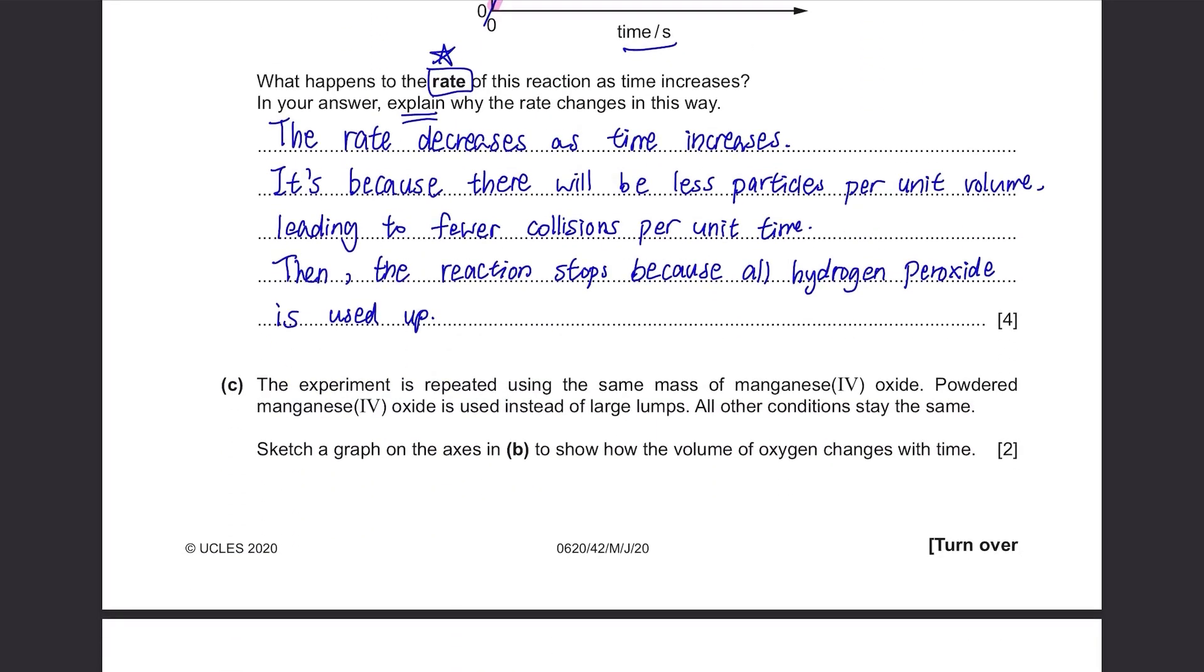Part C: The experiment is repeated using the same mass of manganese 4 oxide. Powdered manganese 4 oxide is used instead of large lumps. All other conditions stay the same. Sketch a graph on the axis to show how the volume of oxygen changes with time. What difference does it make if you use powdered ones instead of large lumps? It's the surface area that is changed. If they use powdered manganese 4 oxide, the surface area will be much larger. What happens to the rate of reaction if the surface area is increased? The rate of reaction is increased as well.